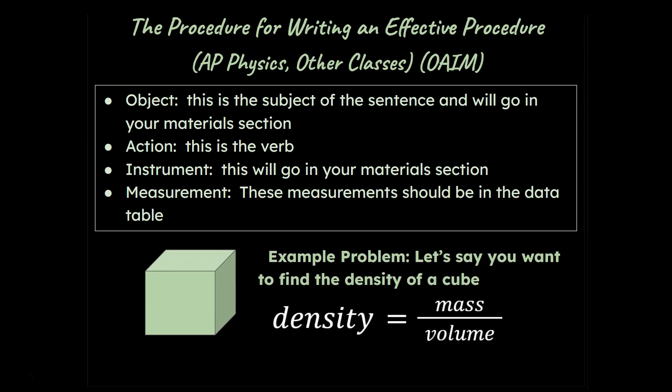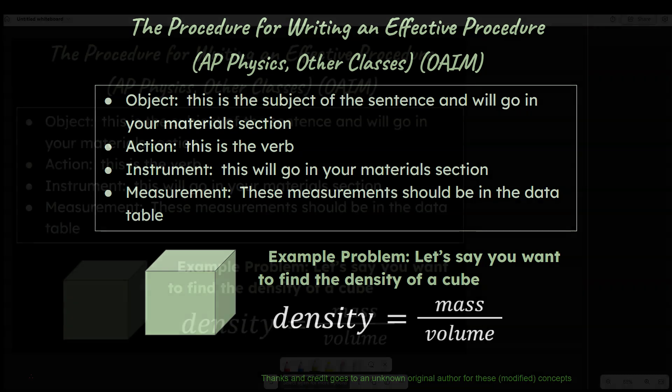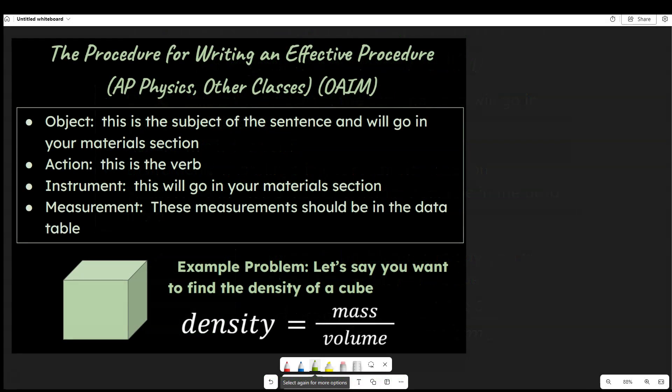All right, and so let's try an example problem here. Let's say you want to find the density of a cube. So remember, density is going to be mass divided by volume. So let's think about how to do one of these problems using the OAIM method. So if we wanted to write a procedure for the density of the cube, what we could do is we could measure.